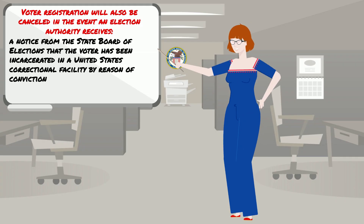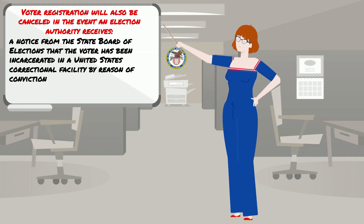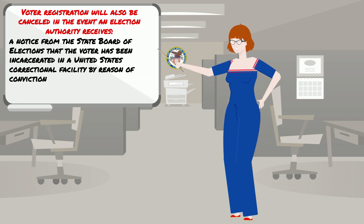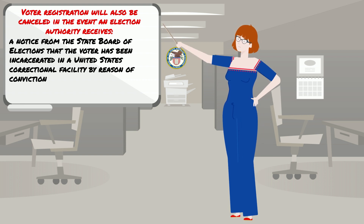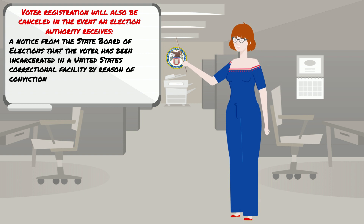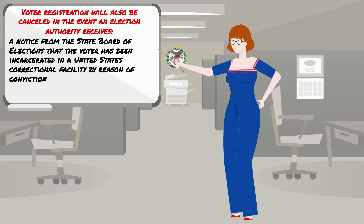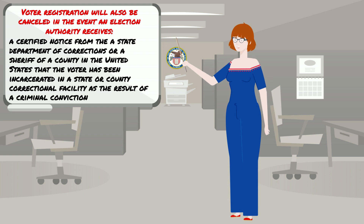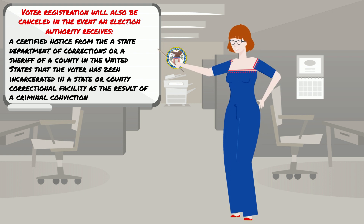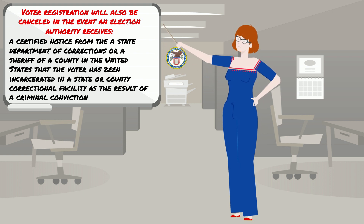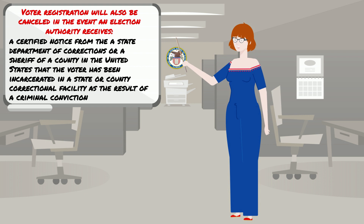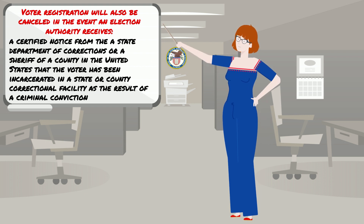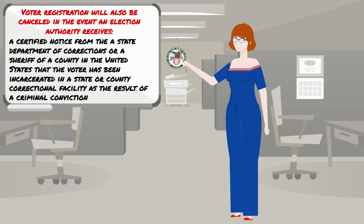Voter registration will also be canceled in the event of an election authority receiving a notice from the State Board of Elections that a voter has been incarcerated in a United States correctional facility by reason of conviction, or a certified notice from a State Department of Corrections or a sheriff of a county in the United States that the voter has been incarcerated in a state or county correctional facility as a result of a criminal conviction.